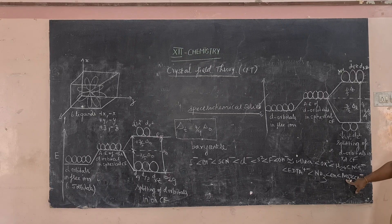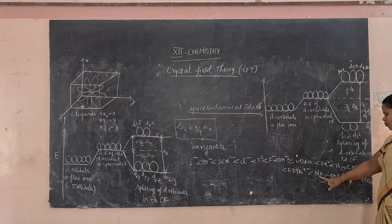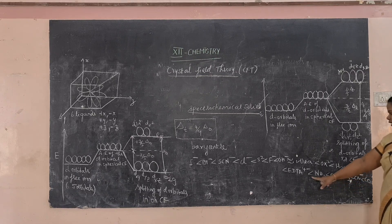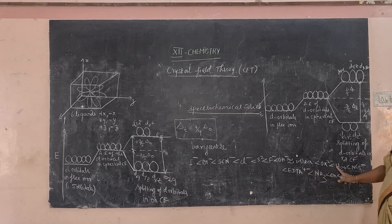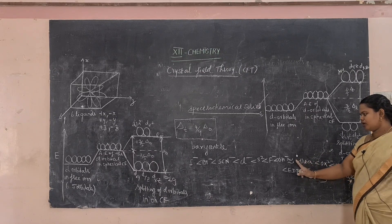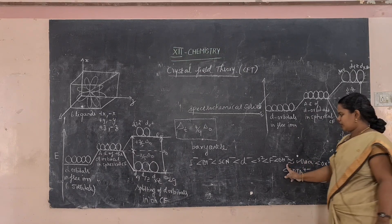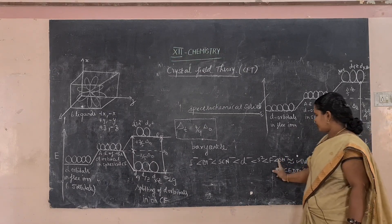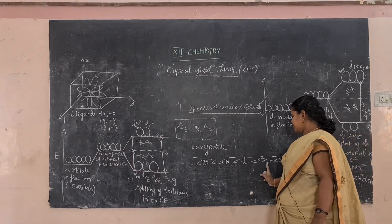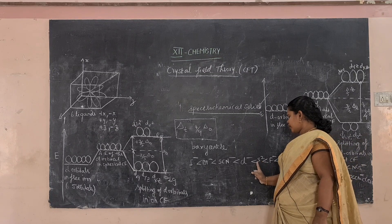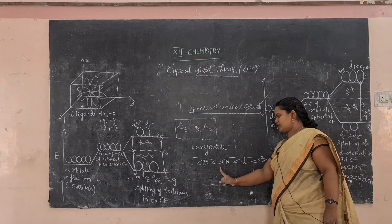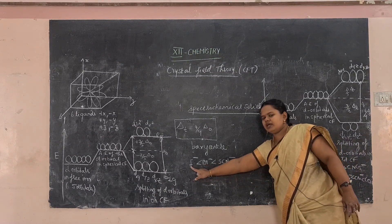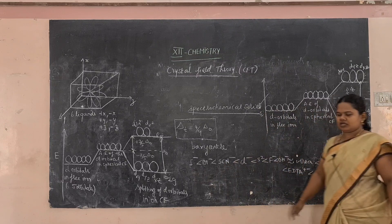The spectrochemical series is: CO > CN⁻ > NO₂⁻ > CN > NH₃ > EDTA > NCS⁻ > H₂O > OX²⁻ > urea ≈ OH⁻ > F⁻ > S²⁻ > Cl⁻ > SCN⁻ > Br⁻ > I⁻.